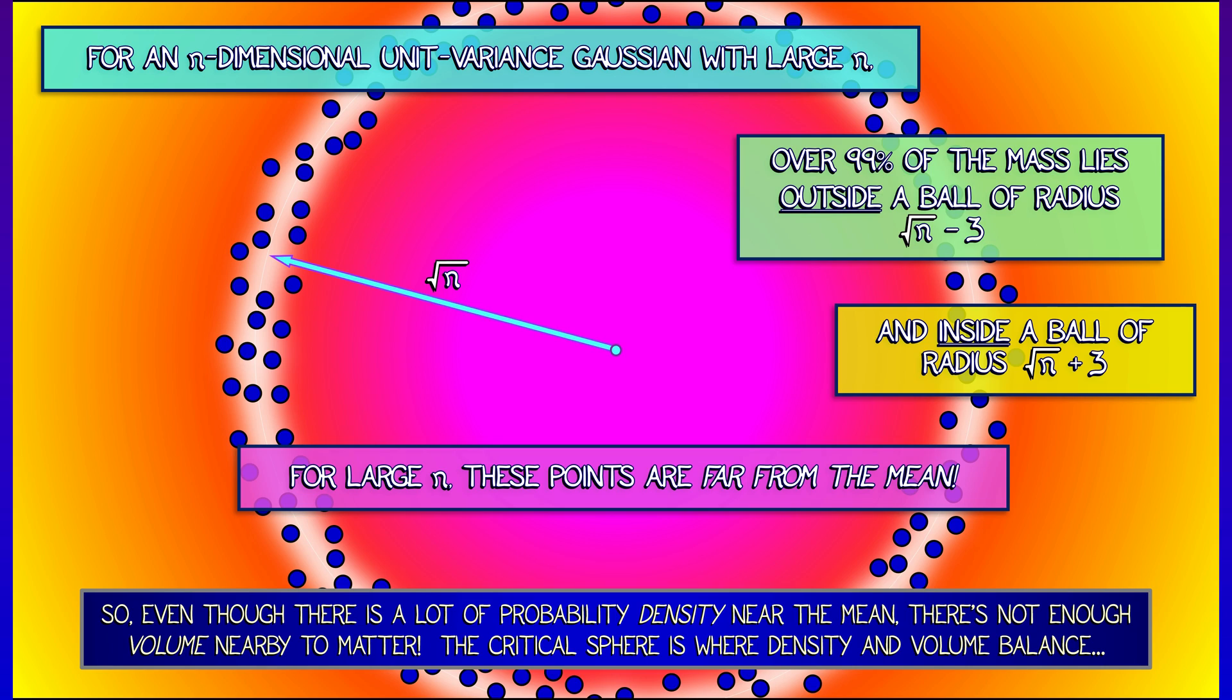Now, the reason for the plus three and minus three is that if you dig into the details of this theorem, this says that it looks like a normal distribution, a standard Gaussian in the radial direction. That's why you've got 99.7% of the mass, radially speaking, lying within three standard deviations, that is plus or minus three, of that critical sphere.